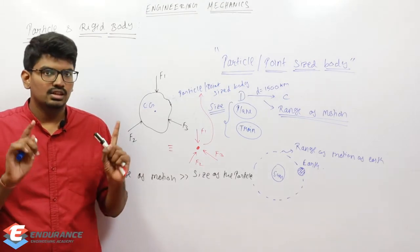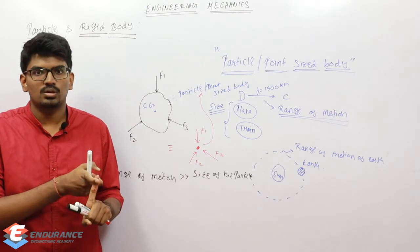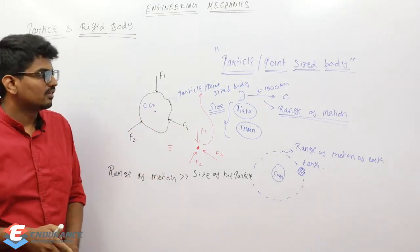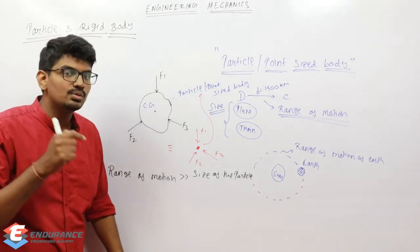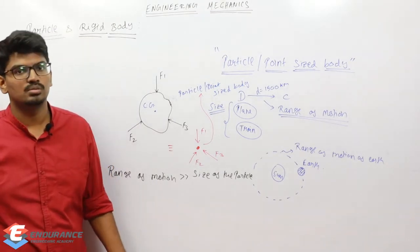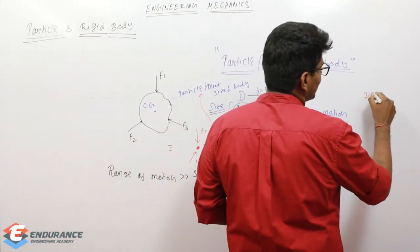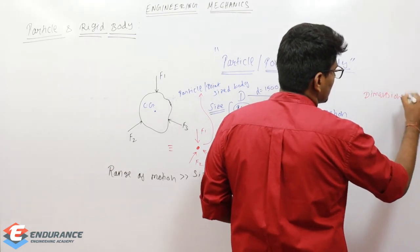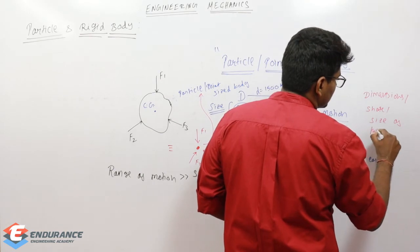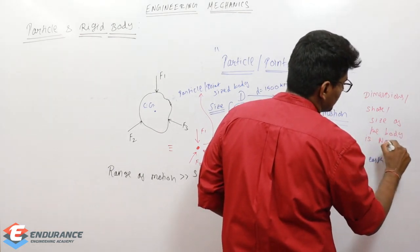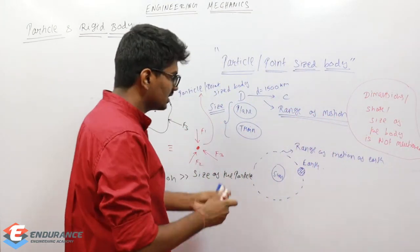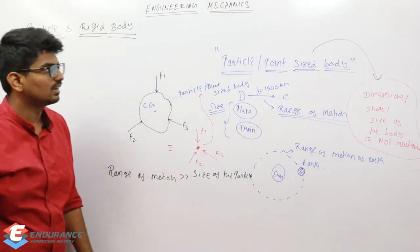Coming to problems — you understand what is meant by particle or point-sized body and how to represent all the forces at the center of gravity. But when do I need to use it in problems? Because in problems, they are not always going to specifically mention it's a particle or point-sized body. Simple logic: when the dimensions, shape, or size of the body is not mentioned in the problem, then I can treat that body as a particle or point-sized body.